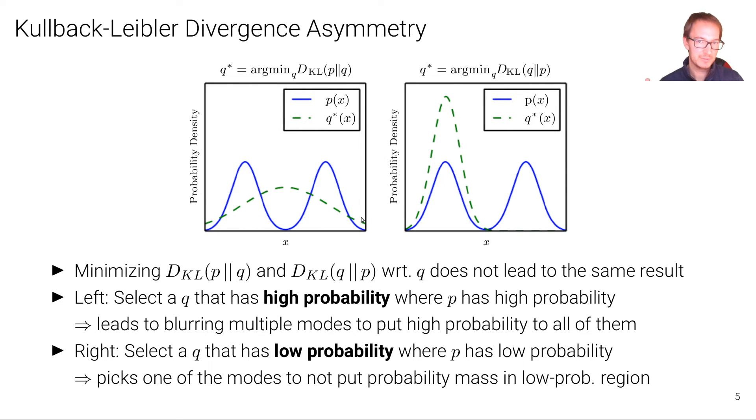So what happens intuitively is that on the left, we select a Q or Q star that has a high probability where P has a high probability. So in other words, this leads to a blurring of multiple modes to put high probability to all of them. We want to have a distribution where there's high probability on the first mode and high probability on the second mode. And because we assume it's a Gaussian, the best thing we can do is to spread probability mass somehow uniformly everywhere on these two modes, the first one and the second one. And we don't care so much about this fact that we here, in this case, we have assigned a lot of probability mass where there's actually none.